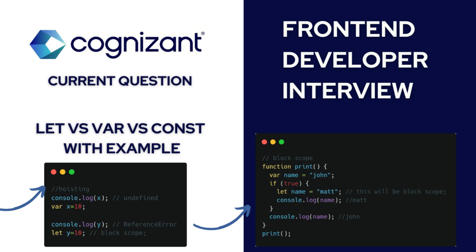Okay, so while talking about both, the first difference is related to hoisting and the second is the block scope versus local scope. We'll see both. If we declare with a var, we'll see that undefined will be printed. For let, it will print a reference error because we cannot access the let variable before it's declared.